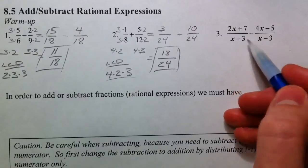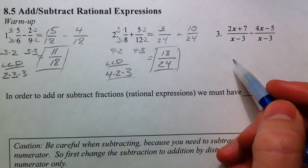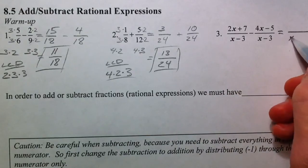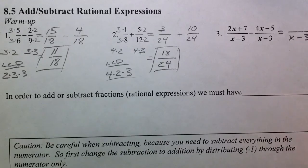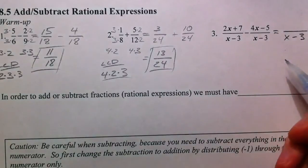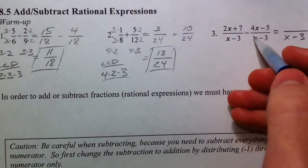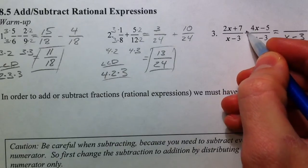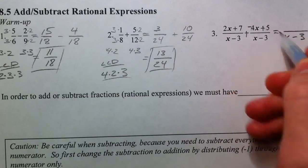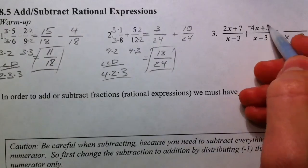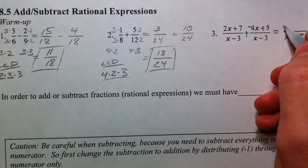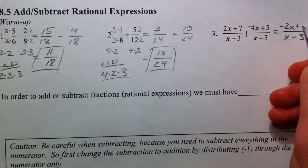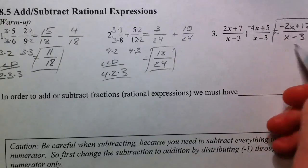Now with an algebraic expression, we still need common denominators. We have x minus 3 and x minus 3, so we'll end up with x minus 3 as the denominator. The key is to subtract the numerators — be careful because the subtraction sign gets distributed to both the 4x and the 5. We sometimes forget the later terms. So 2x minus 4x is negative 2x, and 7 plus 5 is 12.